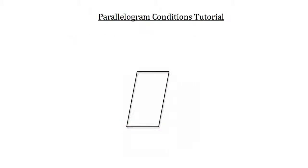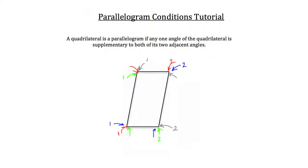Let's take a look at the second condition. A quadrilateral is a parallelogram if any one angle of the quadrilateral is supplementary to both of its two adjacent angles. If the angle indicated right here is supplementary to either red angle 1 or red angle 2, then this quadrilateral is a parallelogram.